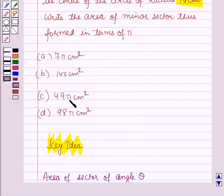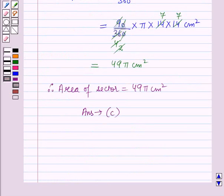Therefore, area of the sector is equal to 49π cm². So the answer to this question is option C, which is 49π cm². So this is the solution of the given question, and that's all for this session.